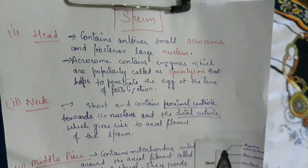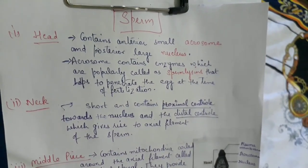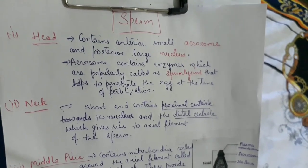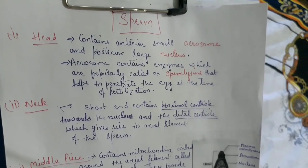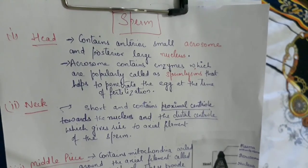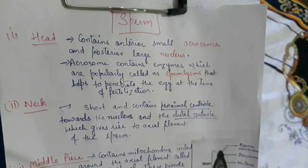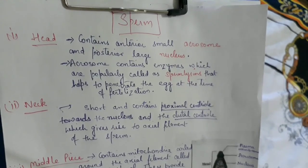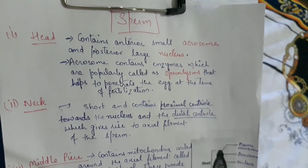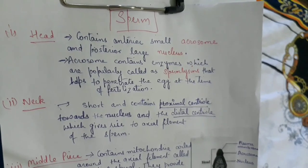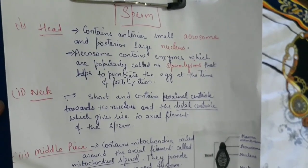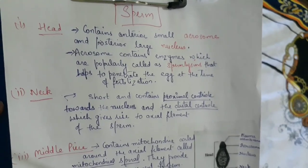In this session we are going to discuss the structure of sperm and structure of ovum, that is male and female gamete. In our last videos we have already discussed male reproductive system, female reproductive system, and gametogenesis in detail. Now we are going to discuss the structure of gametes in detail. Let's begin with the structure of sperm.